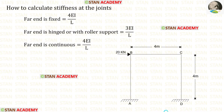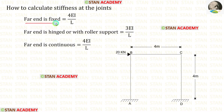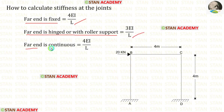In the moment distribution method, we have to find the distribution factor. To find the distribution factor, we have to calculate the stiffness. If the far end is fixed, the formula is 4EI upon L. If the far end is hinged or with roller support, the formula is 3EI upon L. If the far end is continuous, the formula is 4EI upon L.